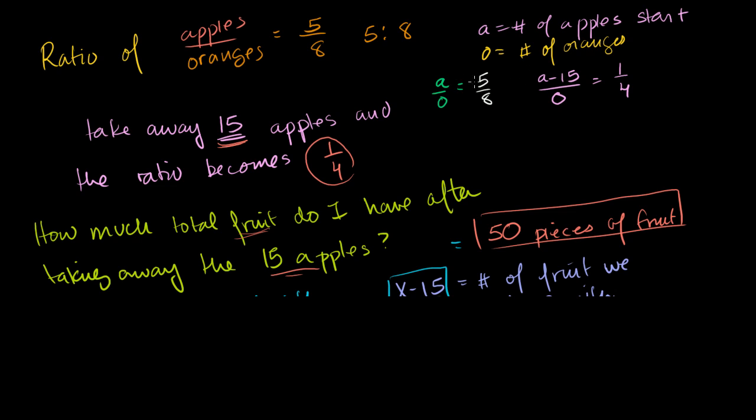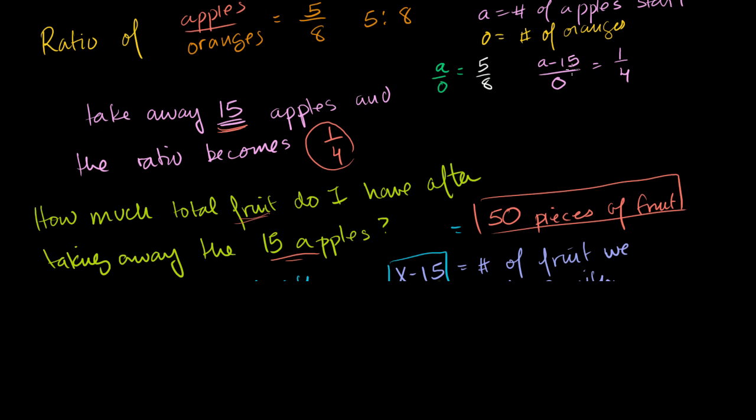Let's see if we can solve these two equations. I have two equations here and I have two unknowns. Let's see what we can do here. First let me write down my two equations. The original apples to oranges ratio is 5 to 8. Then when we remove 15 apples, the ratio of our new number of apples to oranges is equal to 1 over 4. This is just an algebraic way of stating our problem.